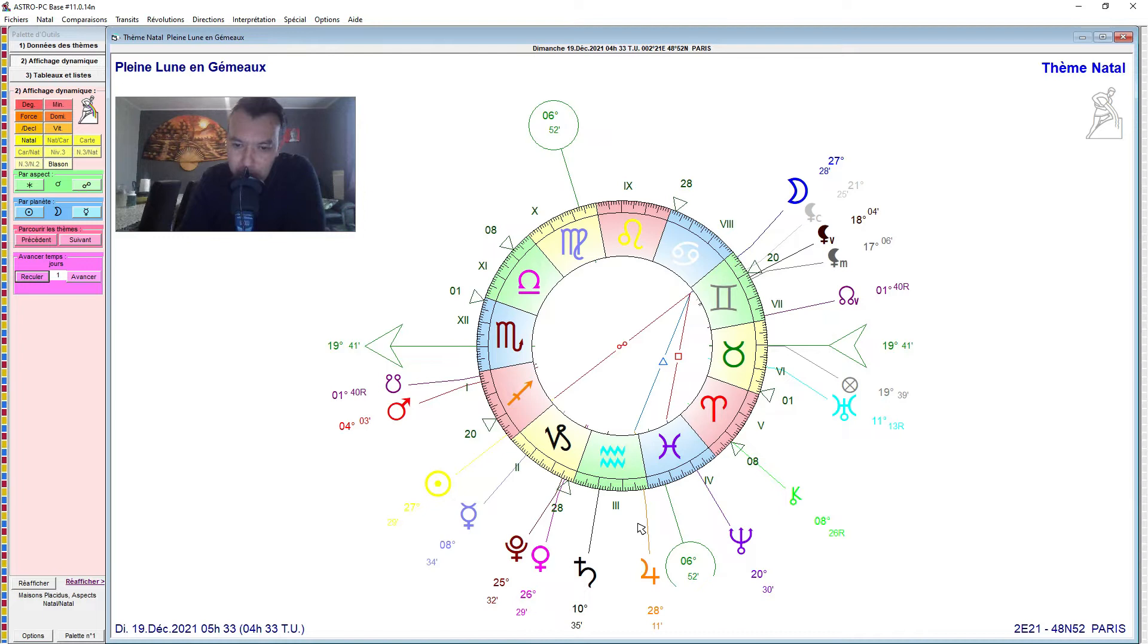Mais soutenu, quand même, par un beau trigone de Jupiter, donc, avec des fantasmes bien vécues, on va dire, on se sent vraiment à l'aise, on peut échanger, vraiment, on est vraiment épanoui, avec ce Jupiter en verso, bien inspecté. On voit le sextile au soleil, en plus, maître du soleil, là, il y a vraiment, quand même, de l'épanouissement.